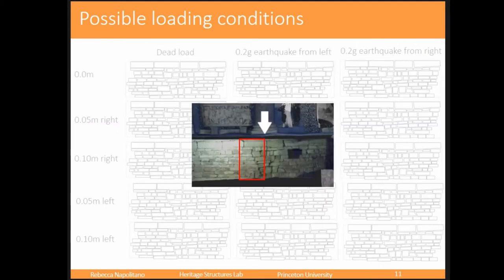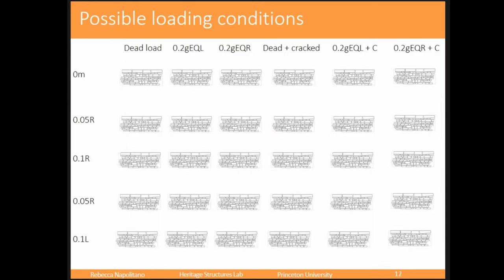There was also this joint we were interested in understanding — it's roughly regular. Is there a possibility that this was originally two separate walls that were never bonded together, that they started out as a construction joint with never any cohesion or tensile strength between those blocks, and that's why it's a crack? So we added that to the simulations under dead load and under all the different versions of earthquakes, wanting to be as thorough as possible, since there are many different combinations that could have led to this crack.